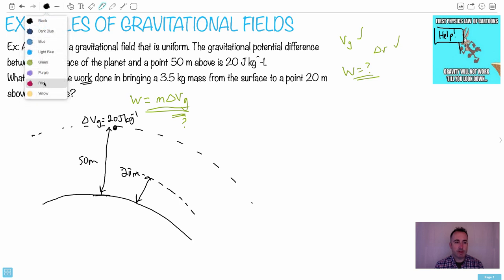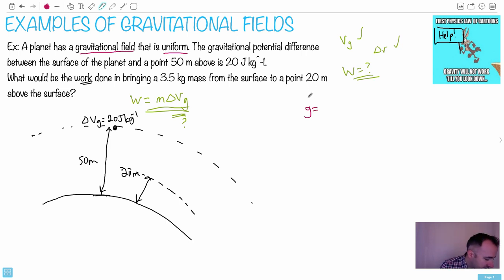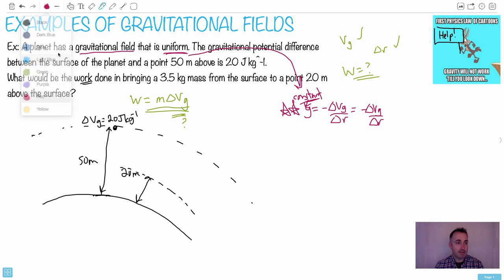So I'm going to draw myself like a planet here, and I'm going to draw myself a point that's 50 meters above. So if I do that distance right there, let's assume that's 50 meters, then I know that the gravitational potential difference is 20, so I know that right here, it's 20 joules per kilogram. That's the VG from the surface to here. That's the delta VG from the surface to here. Now we're told basically we want to take an object and bring it to a height of 20 meters above. So a little bit less than half, maybe something like this. I'm looking for something that's 20 meters instead.